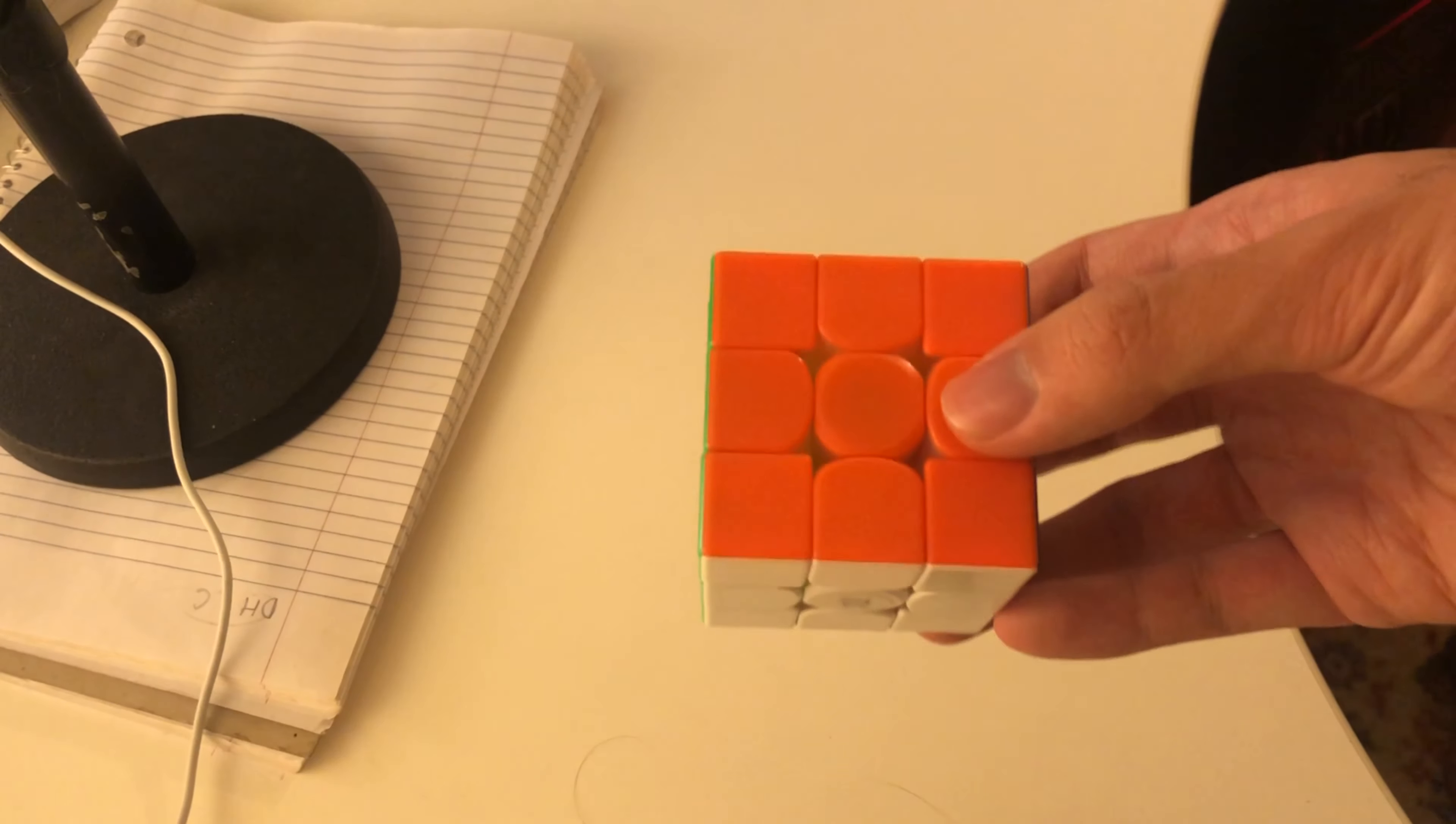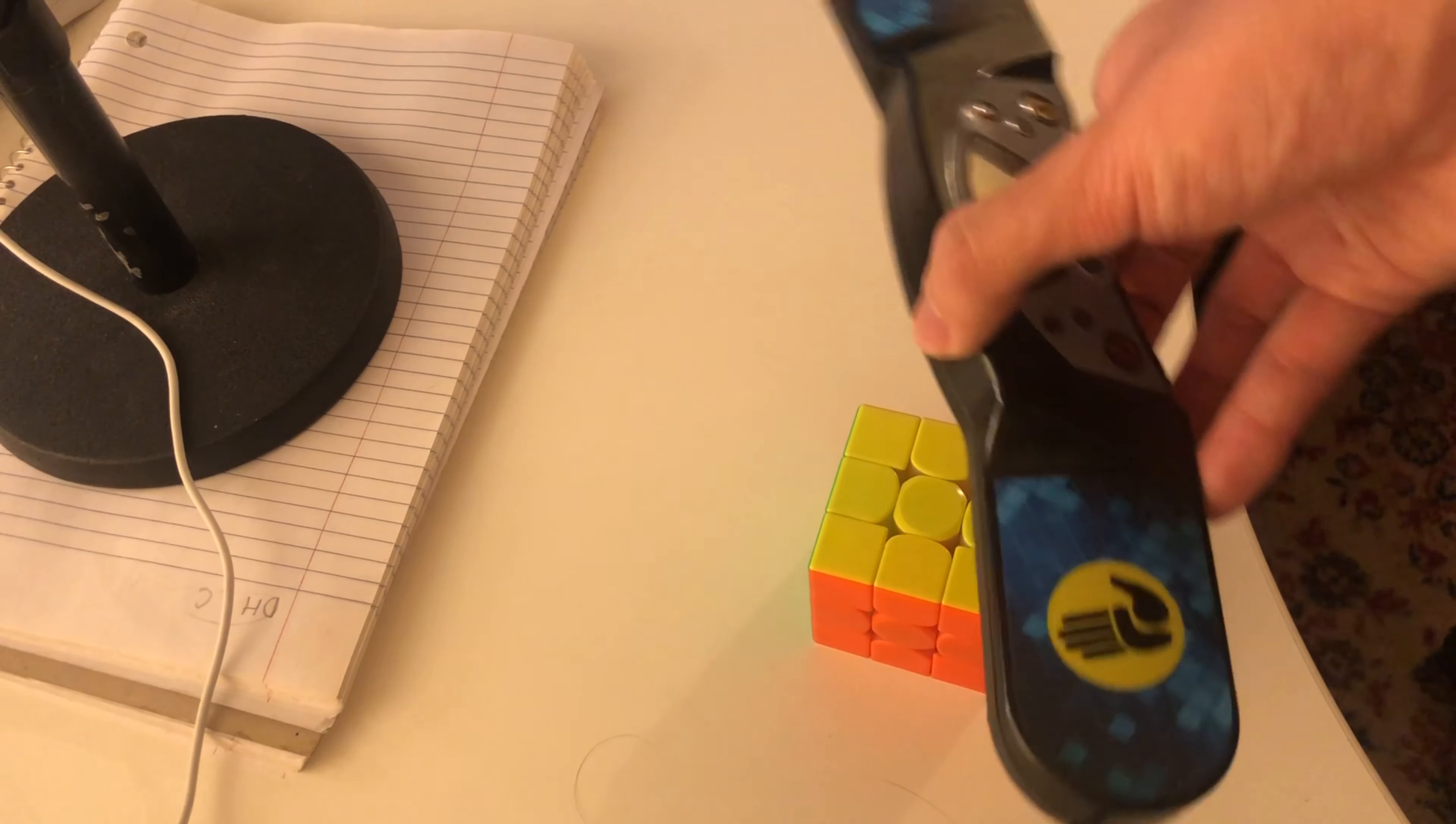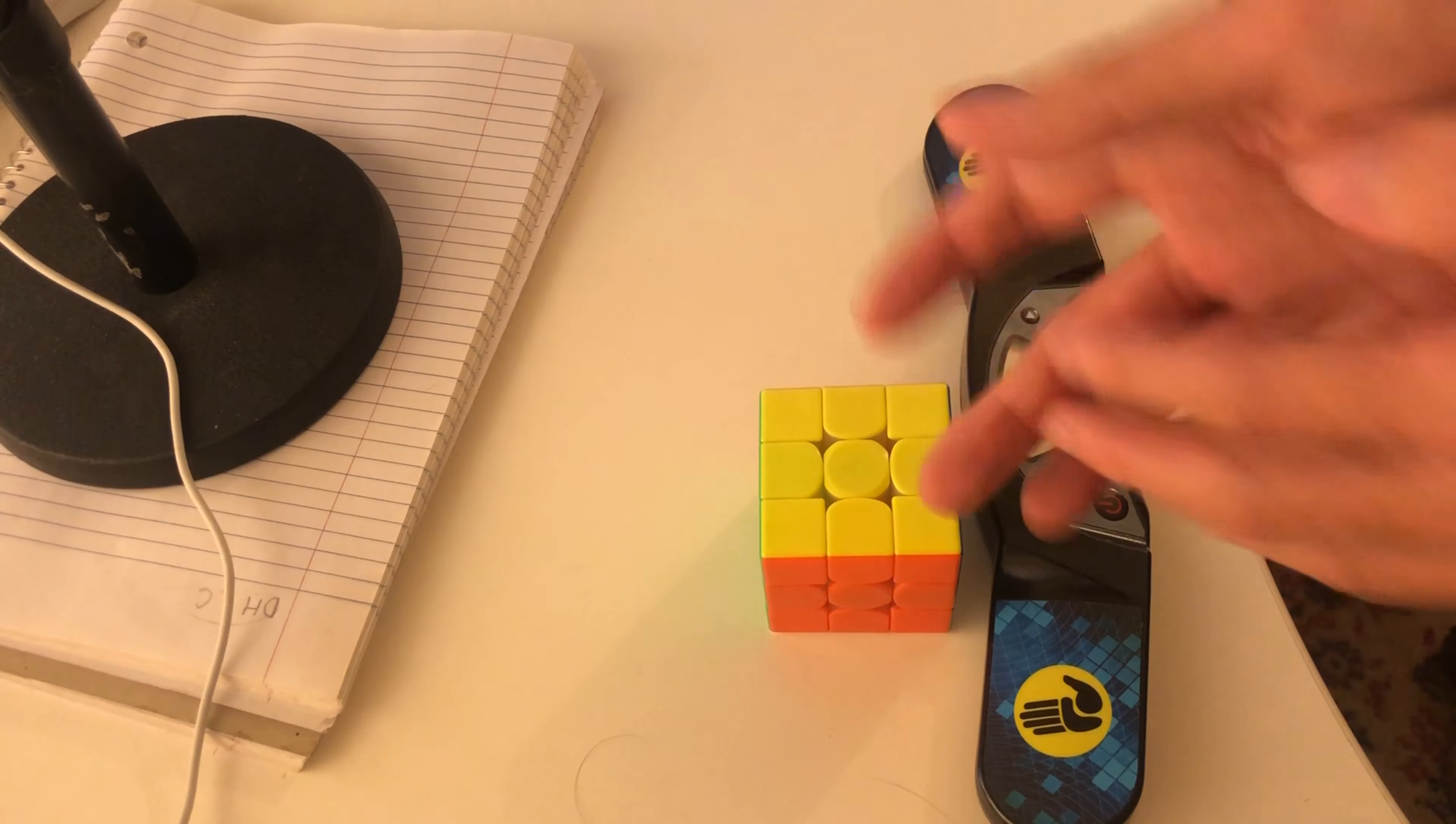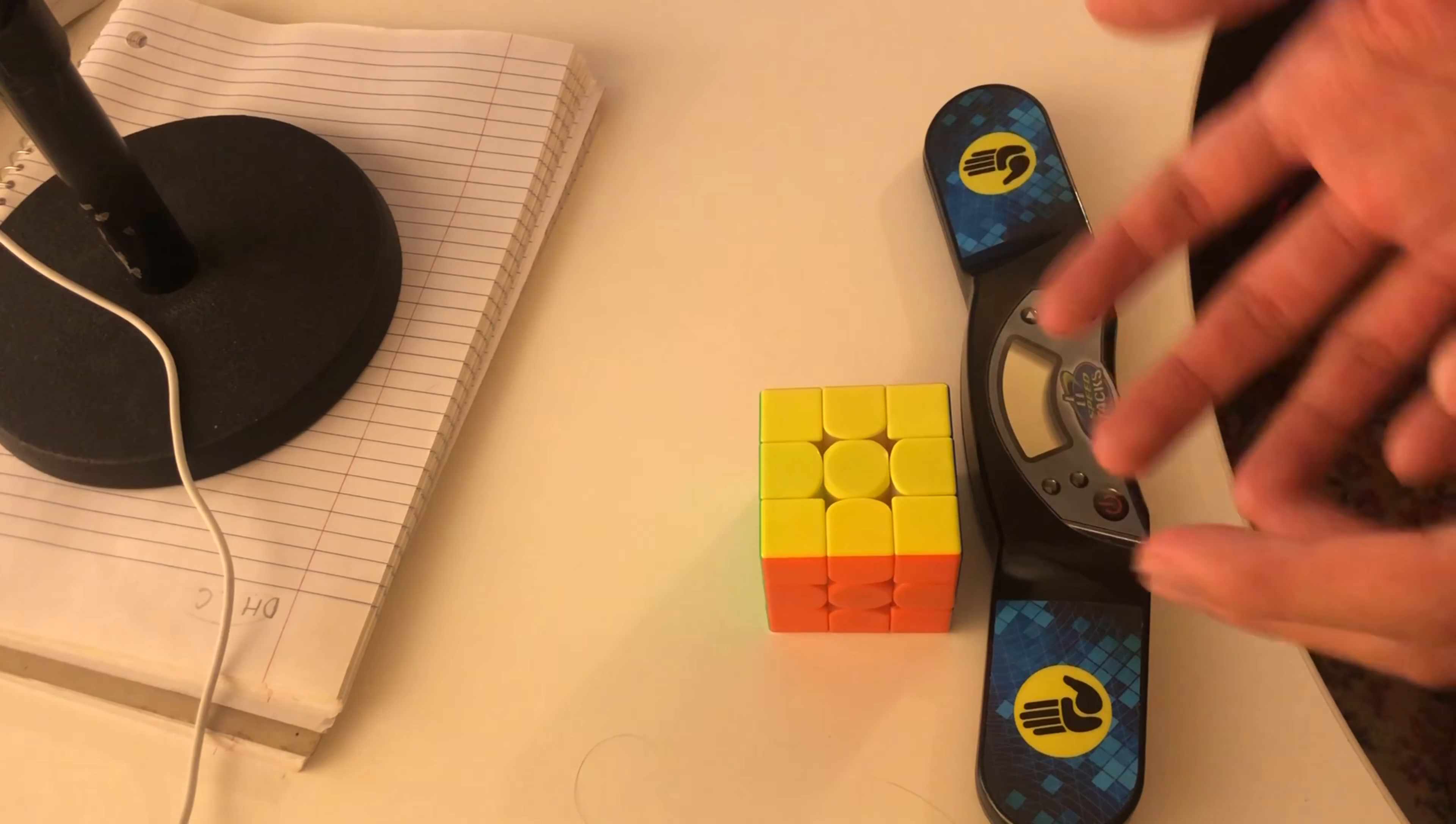So that was probably like the best last layer a CFOP solve could have, and when I did the solve again, like using the same scramble but not knowing that that was coming up, I did it with a stack mat timer, I got 8.28, so I just feel like, man, a sub 10 average of 12 totally was within my reach, even though that sounds crazy fast for me, it's like within the realm of possibility.